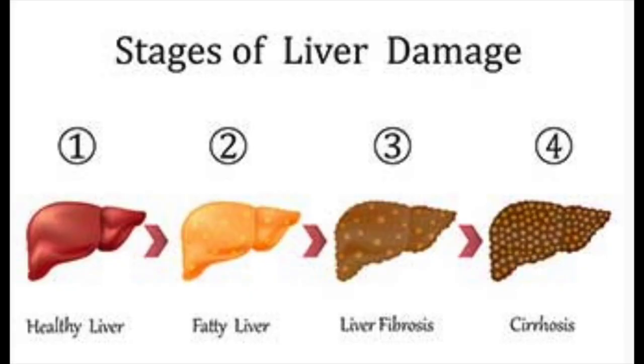Certain types of jaundice, if caused by hepatitis A, are completely curable with medications. Infections with hepatitis B and C viruses cause long-term effects on the liver. Alcohol is another cause — excessive alcohol use also causes a lot of liver diseases. It causes hepatitis, fatty liver, and can progress to cirrhosis and even hepatocellular carcinoma, or cancer of the liver.